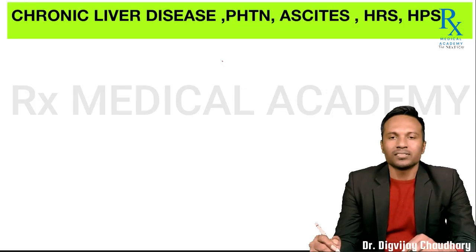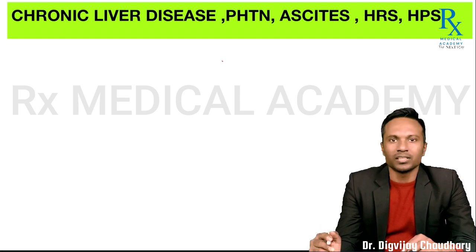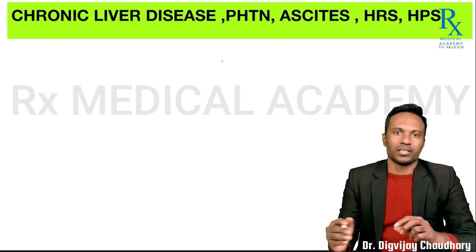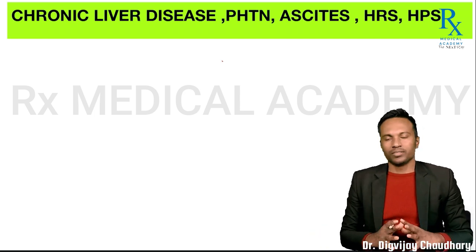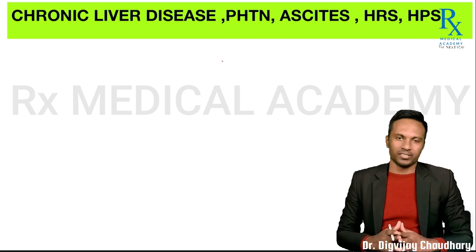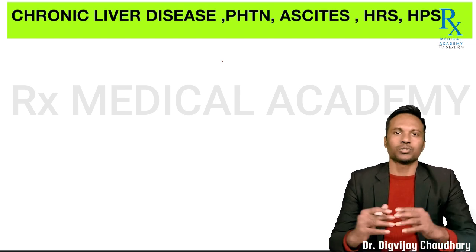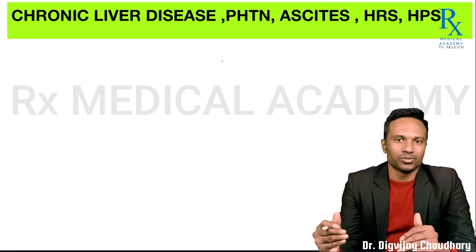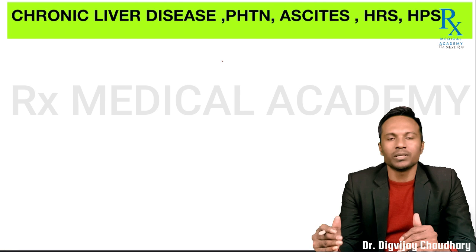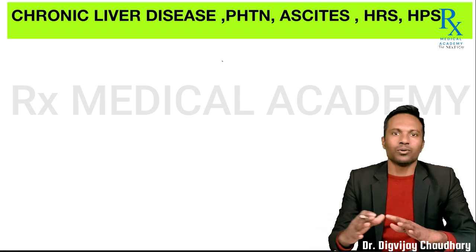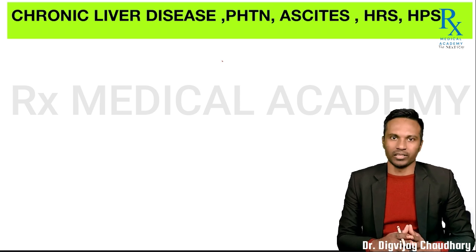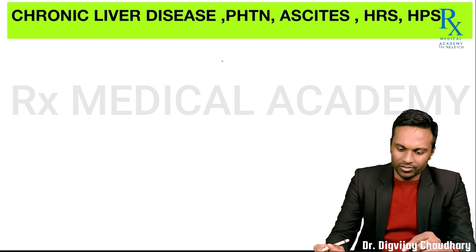Hi guys, today is lecture three on the hepatobiliary system. After discussing numerous conditions related to the liver — acute hepatitis, acute liver failure, metabolic liver diseases, and part of viral hepatitis — it's now time to talk about chronic hepatitis progressing into cirrhosis, development of portal hypertension, and over a period of time, decompensated cirrhosis or acute-on-chronic liver failure.